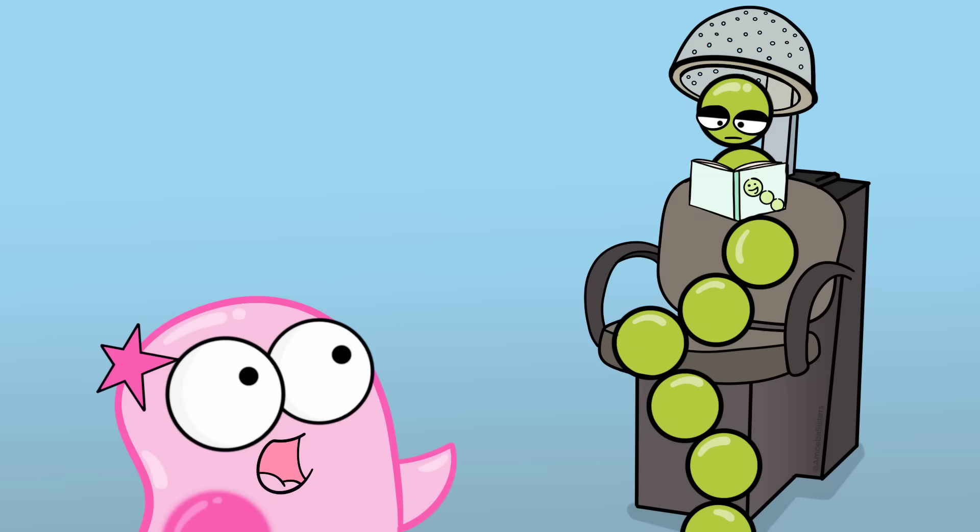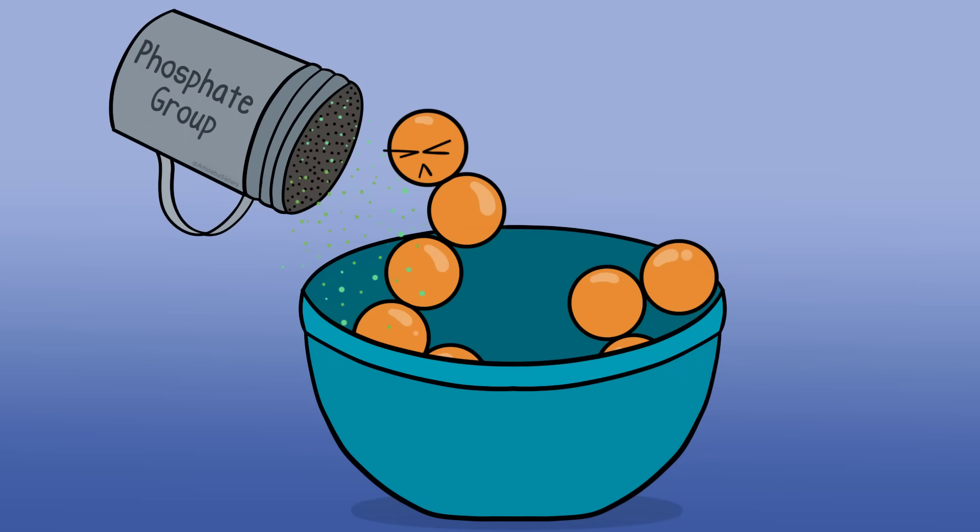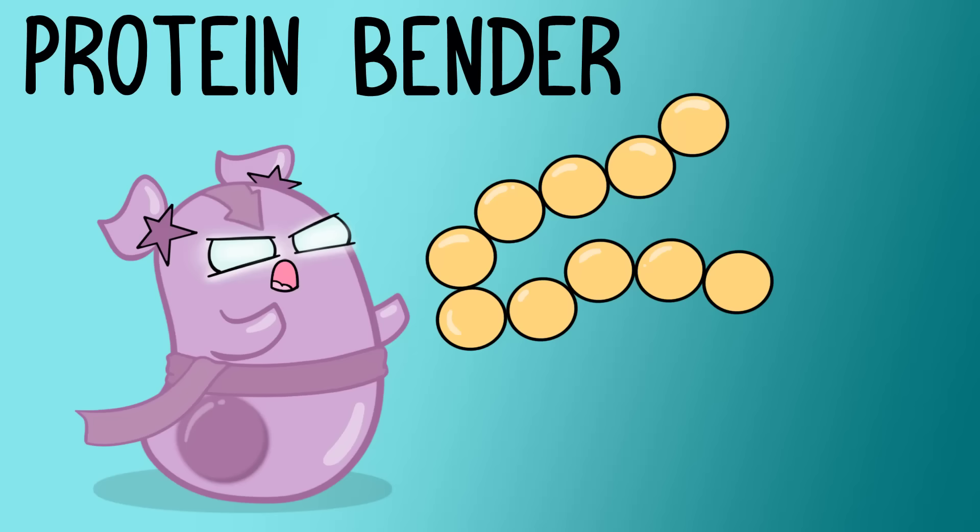By modifications, we can mean many things. It might be adding certain chemical groups, such as phosphorylation, something to definitely explore. But another important event to make a functional protein is, believe it or not, folding.